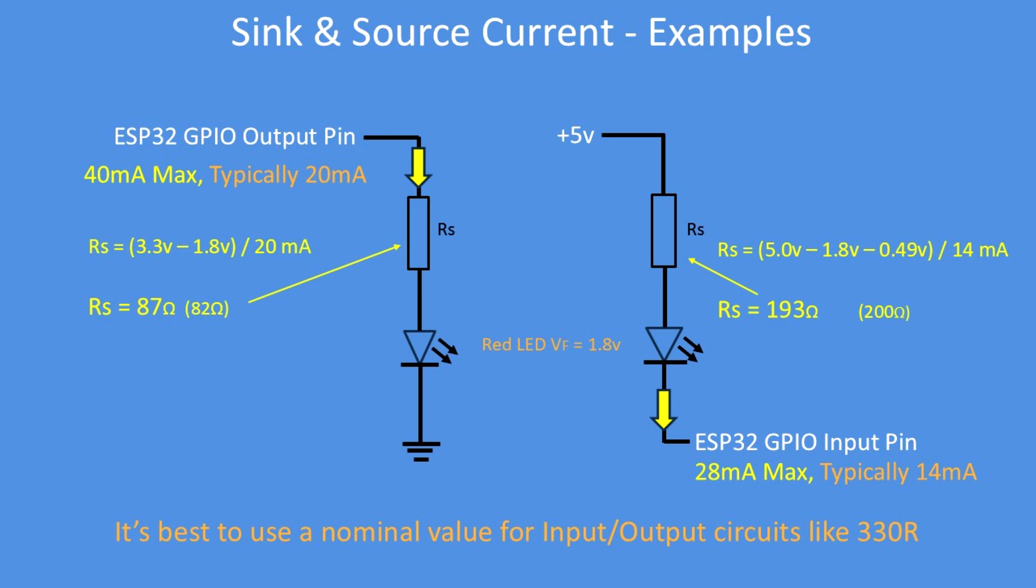On the right is using a 5 volt supply and series resistor to make sure that the input current doesn't exceed the required level, which I've chosen to be half of the maximum rating of 14 milliamps. And again, that's how you calculate the values.